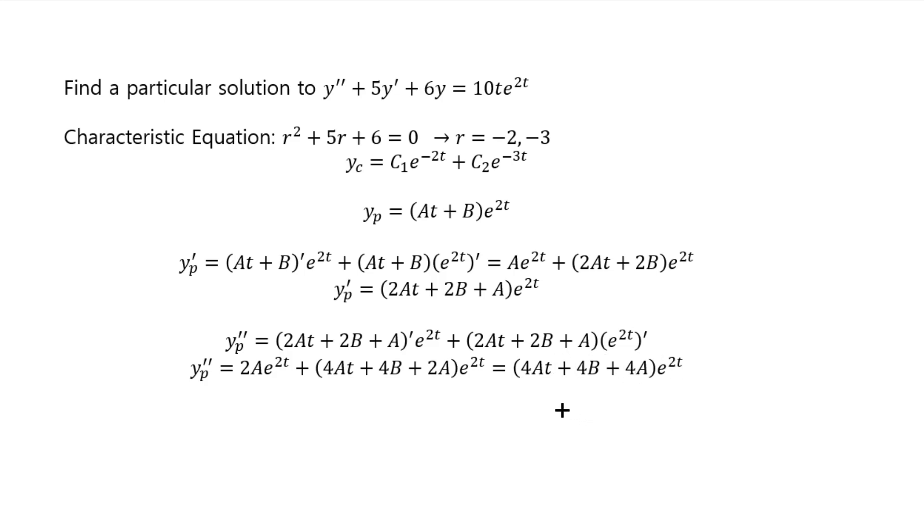So, we have the second derivative. We have the first derivative. We have the original function. We plug everything to the left side. And let's simplify. So, this is plugged in here. This is plugged in here, so there's a 5 in front. And this is plugged in here, so there's a 6 in front. Now, combine and simplify.